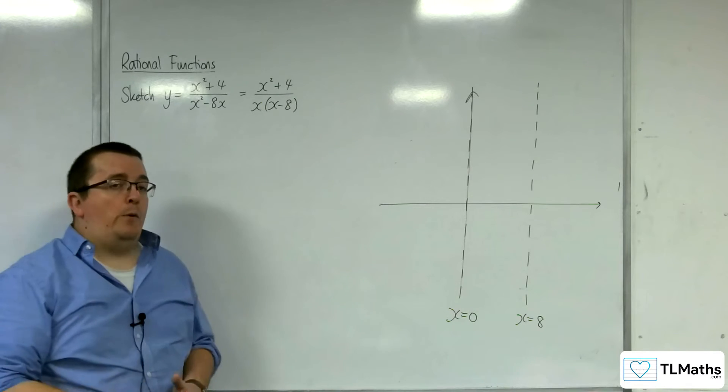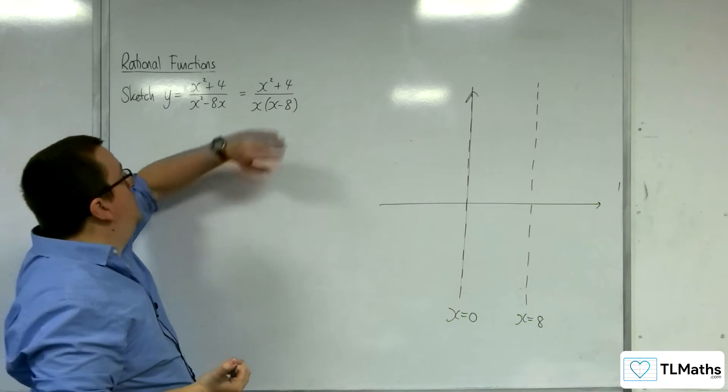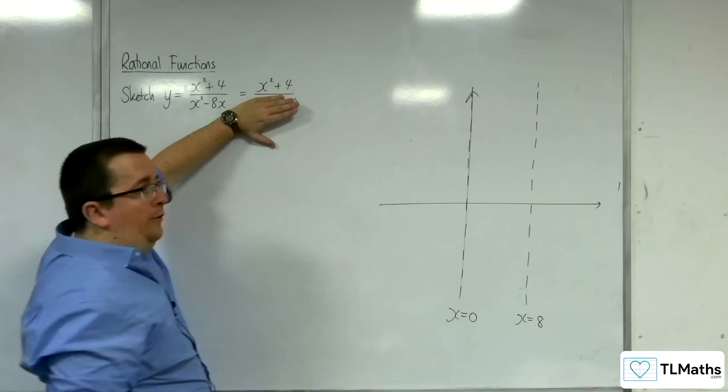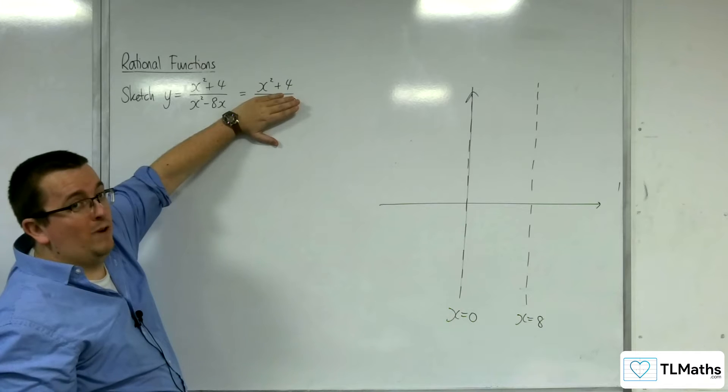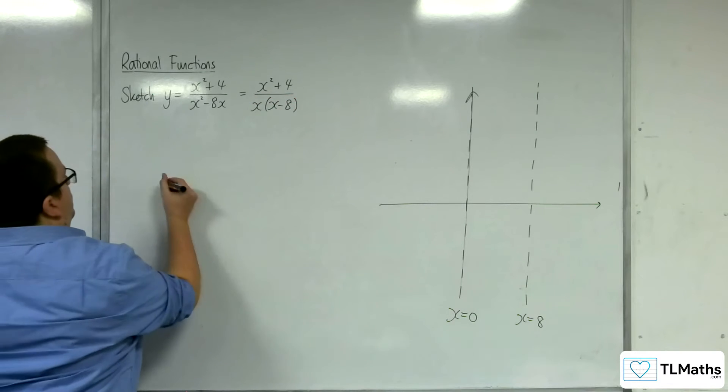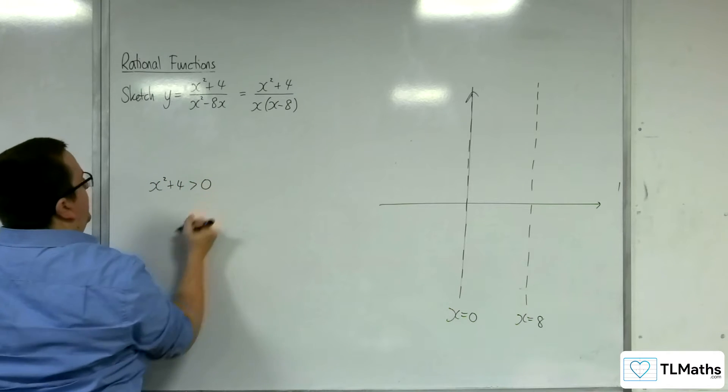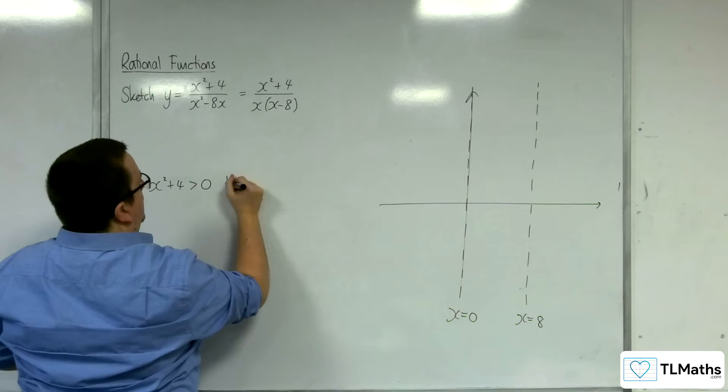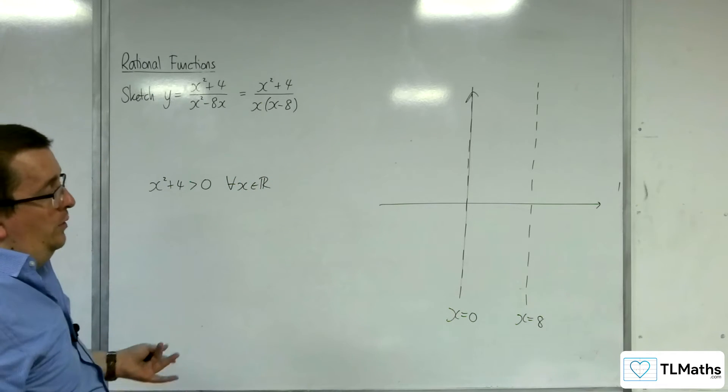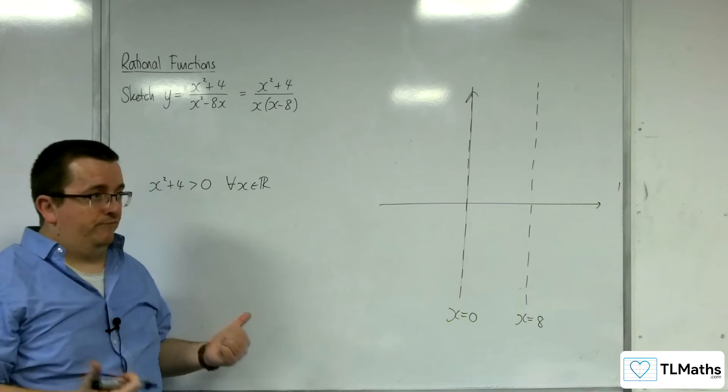Next, we work out where it crosses the x-axis, which is when y = 0, when the numerator is 0. However, x² + 4 is always greater than 0 for all real values of x. So there are no points where it crosses the x-axis.